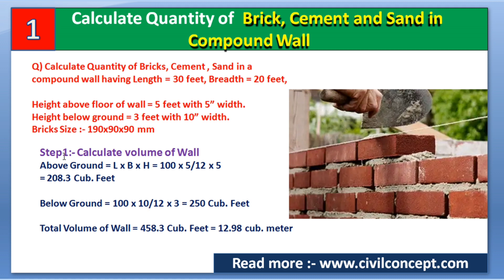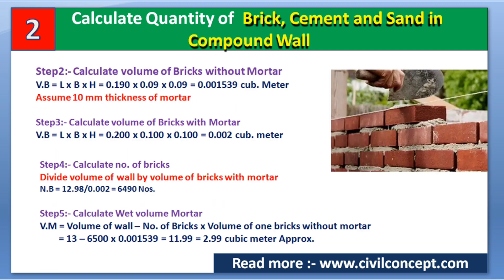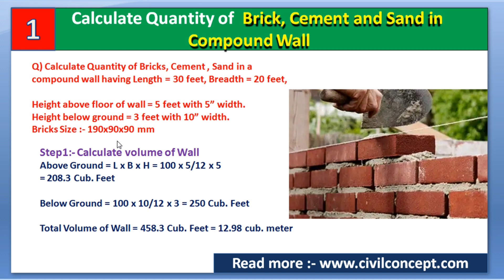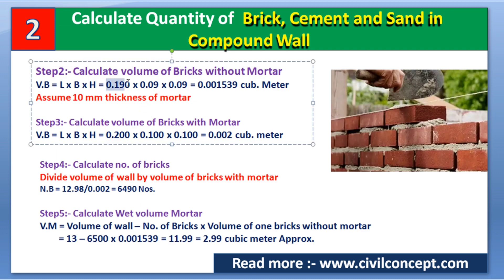In Step 2, we calculate the volume of a single brick without mortar. The brick size is 190 × 90 × 90 mm. We divide each dimension by 1000 to convert to meters: 190/1000 = 0.19 m, 90/1000 = 0.09 m. Multiplying L × B × H gives us 0.001539 cubic meters — the volume of one brick without mortar.